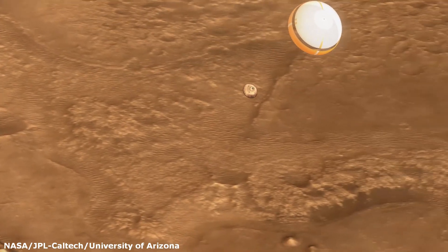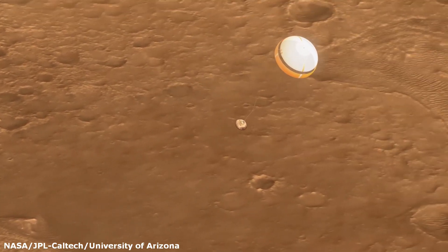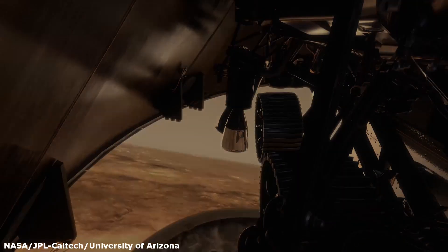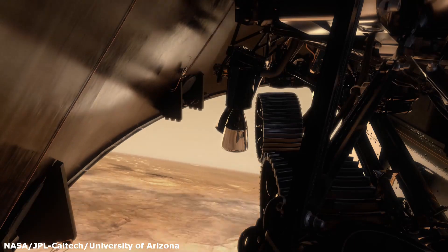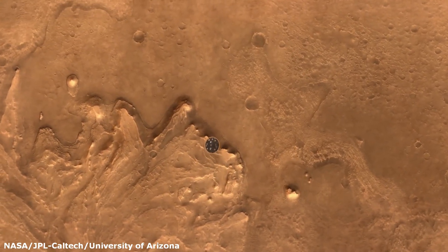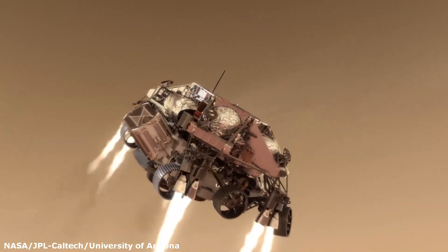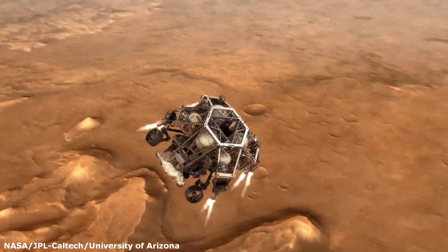The parachute will reduce the speed to 520 kilometers an hour when it will be time to deploy the heat shield. With the heat shield out of the way, the instruments can take measurements and calculate where the optimal landing site will be. Within less than a minute, a solution is found and the landing site is decided.